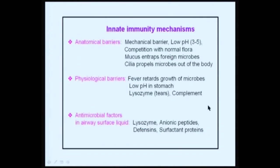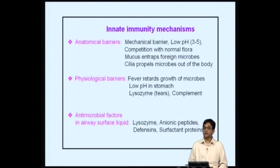Other mechanisms of innate immunity include anatomical barriers: mechanical barriers, low pH, and normal flora — so the pathogen must compete with the normal flora in the body. Mucus entraps foreign microbes and cilia propel microbes out of the body. These are all ways by which microbial spread can be limited.